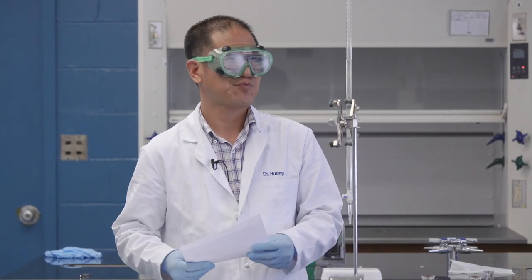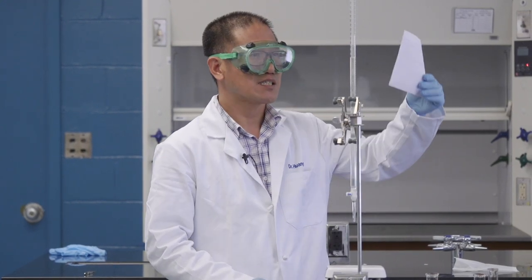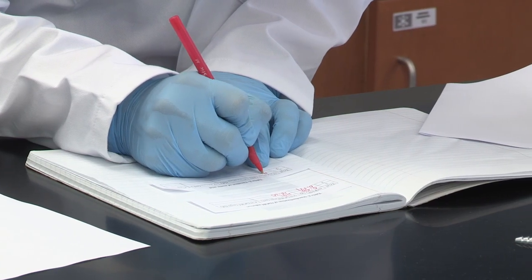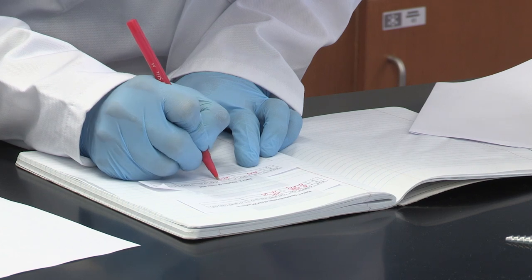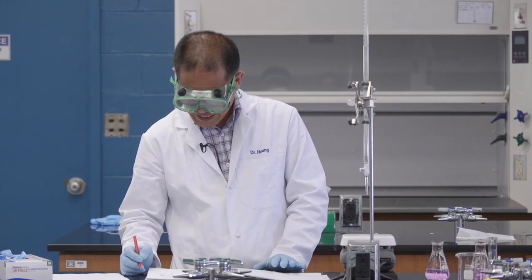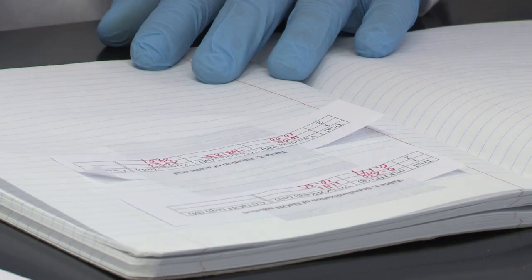Let's take a look at how much solution we used for this titration for the unknown. We may need to use a white paper to help us visualize the bottom of the meniscus. This time, we have used 22.83 milliliters. Let's record the data immediately. 22.83. The second time for the titration of the unknown acetic acid, the volume we use is 24.01 milliliters.